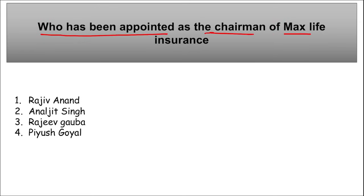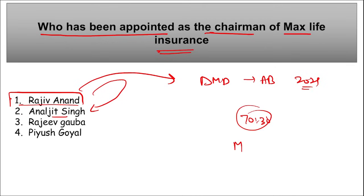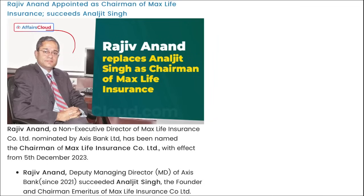Who has been appointed as the chairman of Max Life Insurance? वो है Rajiv Anand। ये Anbaljit Singh को succeed करेंगे as the new chairman of Max Life Insurance। 5 December 2023 से इन्होंने अपनी position संभाल ली। Rajiv Anand deputy managing director हैं of Axis Bank since 2021। Max Life Insurance एक 70-30 joint venture है between Max Financial Services and Axis Bank।